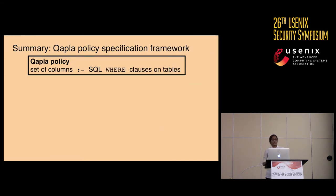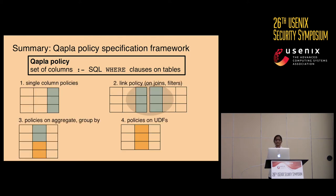To summarize, a Kapla policy is specified on a set of columns and defines constraints on the tables from which these columns are accessed. These constraints are SQL WHERE clauses on the tables that restrict the set of records that can be accessed from each table, given the set of columns on the left-hand side of the policy are accessed together in a query. This syntax is general enough to describe all the kinds of policies I've shown you. We have more details and examples in the paper about the policy syntax and their applications.